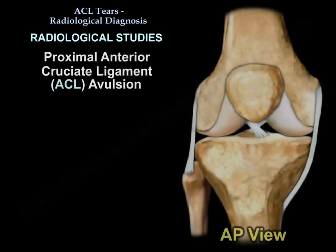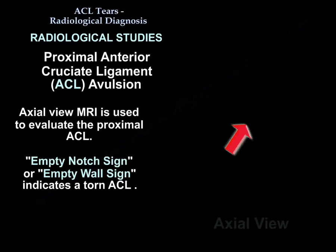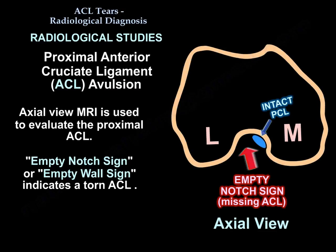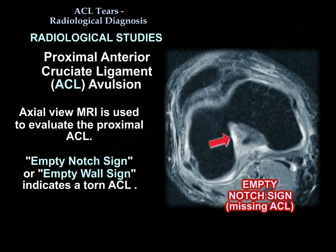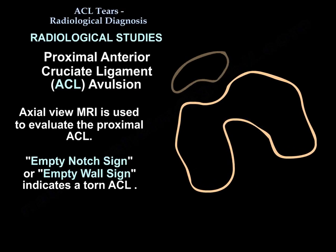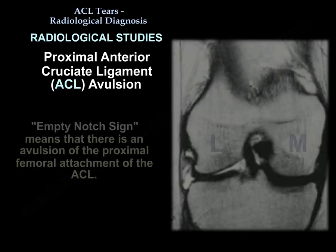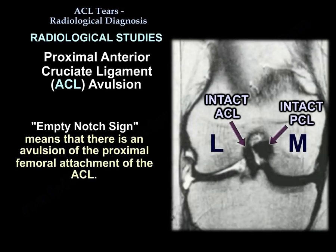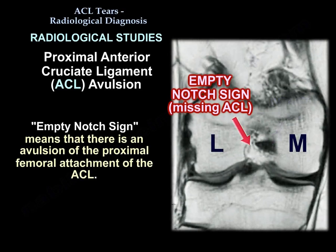On MRI, you can see the proximal anterior cruciate avulsion. The axial view MRI is used to evaluate the proximal ACL avulsion. An empty notch sign or an empty wall sign indicates a torn ACL. You will see an empty notch sign on the MRI, meaning there is avulsion of the proximal attachment — the femoral attachment — of the ACL.